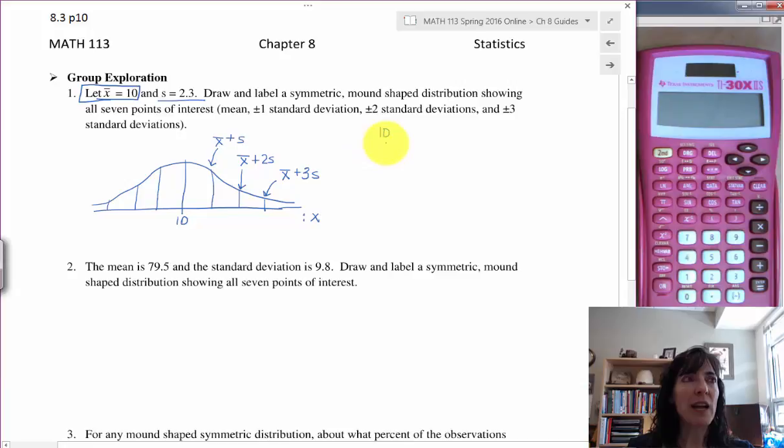So if my x-bar is 10 and I add s, that is 2.3, then I will get 12.3, and that is what I definitely want to write down here: 12.3. That is the value for one standard deviation above the mean when my mean is 10 and my standard deviation is 2.3.